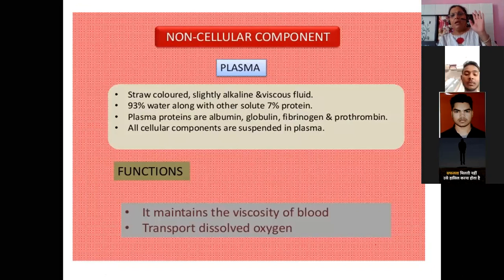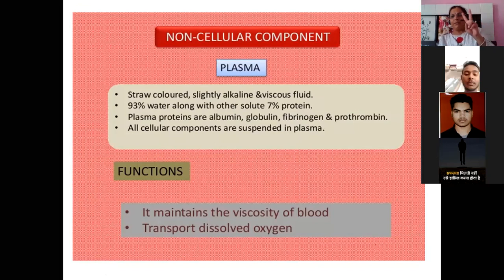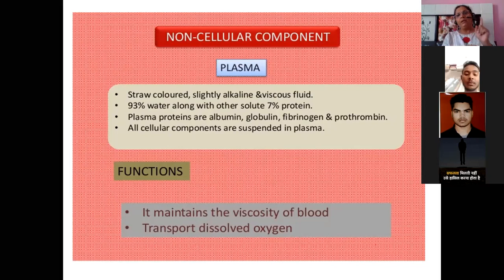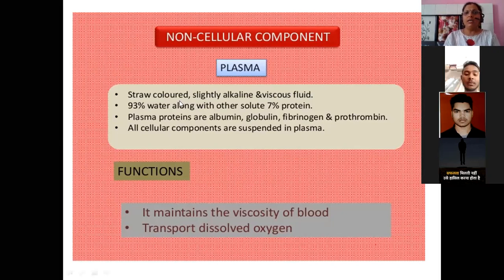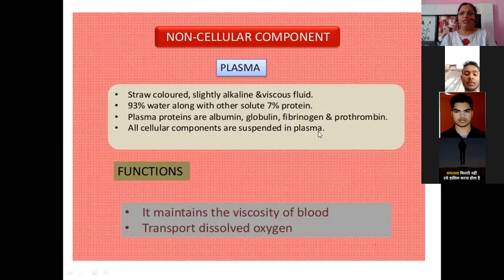Now for the non-cellular components — that is plasma. We have covered the cellular components: RBC, WBC (with two types — granulocytes and agranulocytes, granulocytes having three subtypes), and platelets. Now moving to plasma — the non-cellular component. Plasma is a straw-colored, slightly alkaline and viscous fluid. It is 93% water along with other solutes, and 7% protein. Plasma proteins are albumin, globulin, fibrinogen, and prothrombin. All cellular components are suspended in plasma.